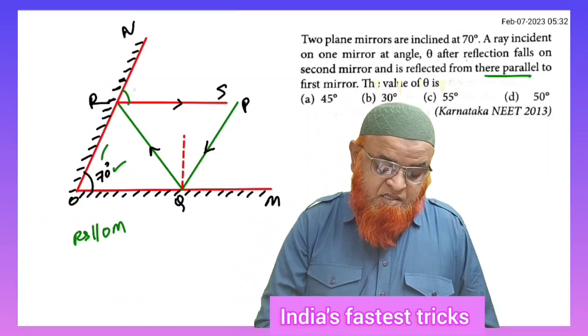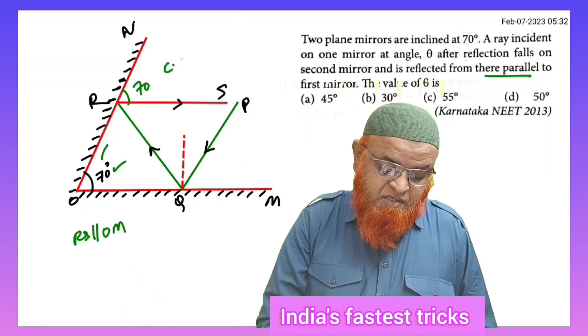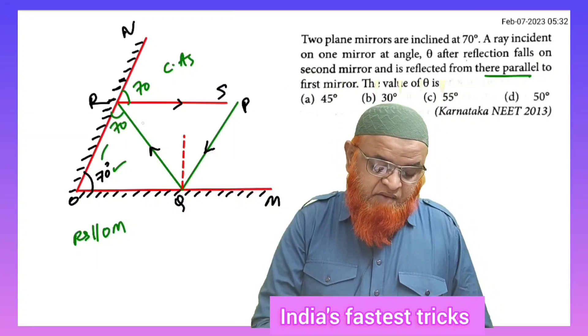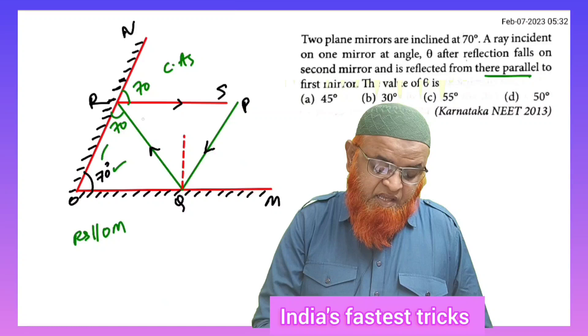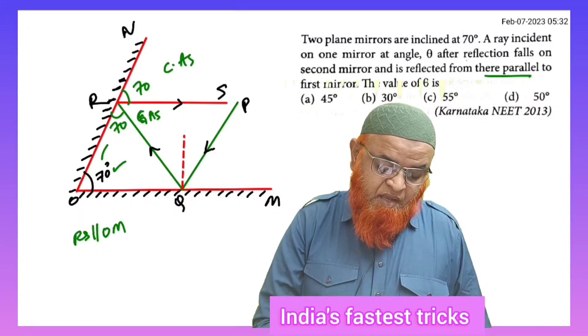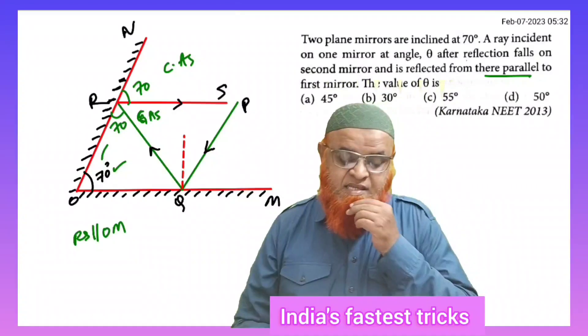Therefore this is 70 means this is also going to be 70. These are called corresponding angles. If this is 70, this is also going to be 70 because these are called glancing angles.